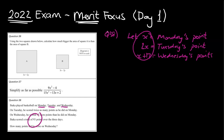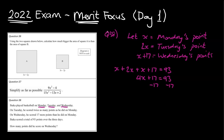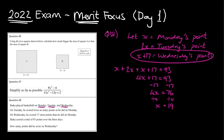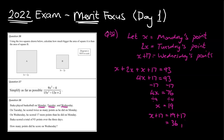We know that all of these have got to add to 93, because we've been told they scored 93 points over the three days. So we go x plus 2x plus x plus 17 equals 93. The x's can be grouped together, giving 4x plus 17 equals 93. Minus 17 from both sides gives 76, and divide by 4 gives x equals 19. A lot of people tend to stop there, but remember x is Monday's points, not Wednesday's. So x plus 17 equals 19 plus 17, which equals 36. That would be your answer — 36 points. That wraps up another merit-focused video for some algebra.